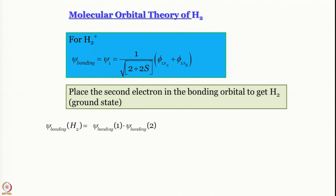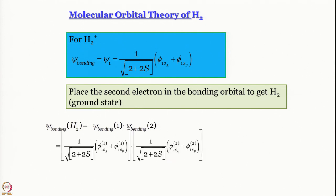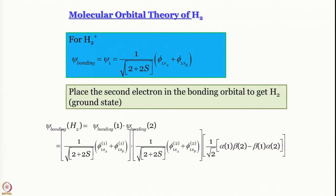The wave function for dihydrogen is psi_bonding(1) × psi_bonding(2). When we expand this expression, the spatial part is symmetric with respect to exchange. The total wave function, which is a product of spatial and spin parts, must be antisymmetric for a fermion like an electron. Since the spatial part is symmetric, the spin part must be antisymmetric: α(1)β(2) − β(1)α(2).